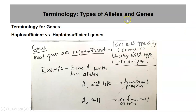Terminology having to do with genes: the main thing I want to talk about is haplosufficient versus haploinsufficient genes. Most genes are haplosufficient, meaning one copy — haploid — of a wild-type allele is enough, it's sufficient, to generate the wild-type phenotype. In a hypothetical gene A with two alleles: A1 is the wild-type allele producing a functional protein, and A2 is a null allele producing no functional protein.